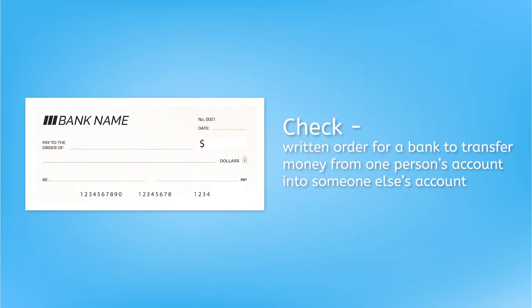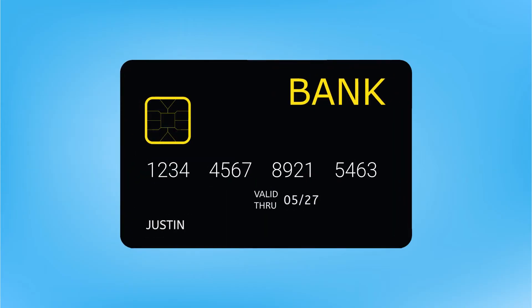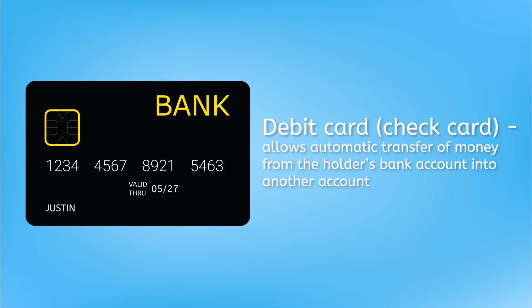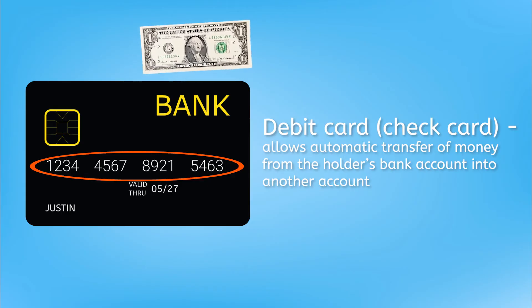There are tons of ways we can move money from our own bank account to somebody else's. One way is with paper checks — checks order banks to transfer a specific amount of money from one person's account into someone else's. The recipient presents the check to their bank, and these numbers tell the bank what account to pull the money out of. Debit cards are basically the same thing, which is why they're sometimes called check cards. These numbers identify your bank account, and when you swipe your debit card at a store or input the numbers when shopping online, it authorizes the store's bank to automatically pull money from your account into theirs.